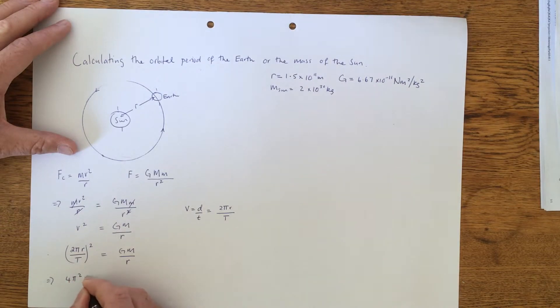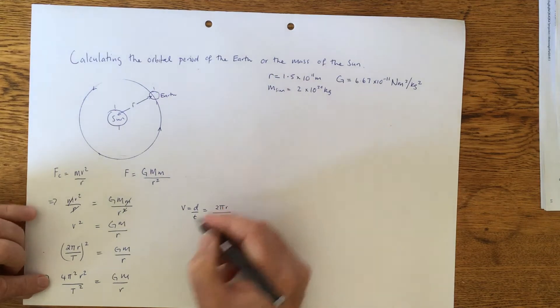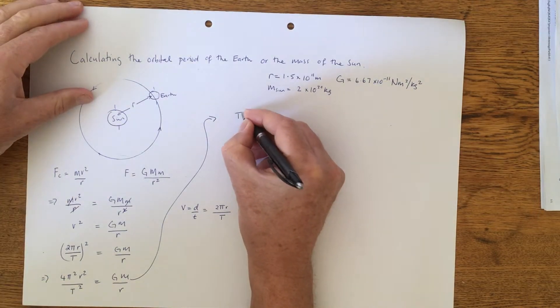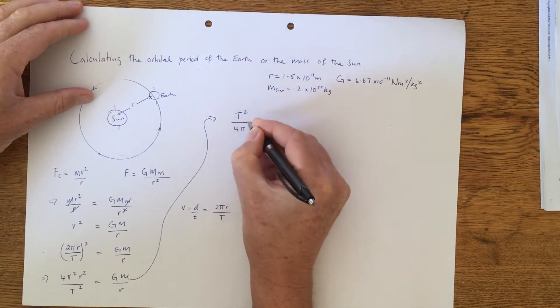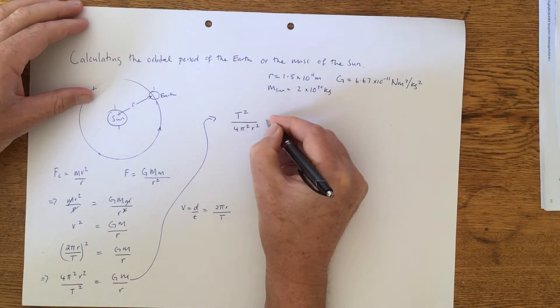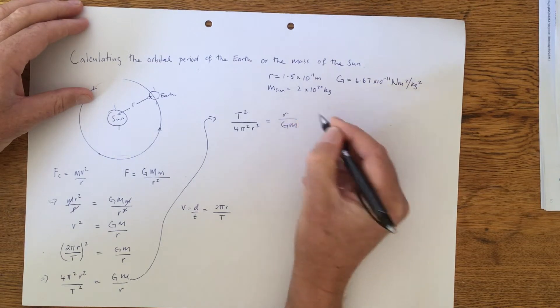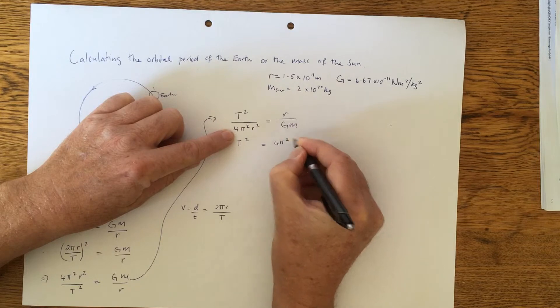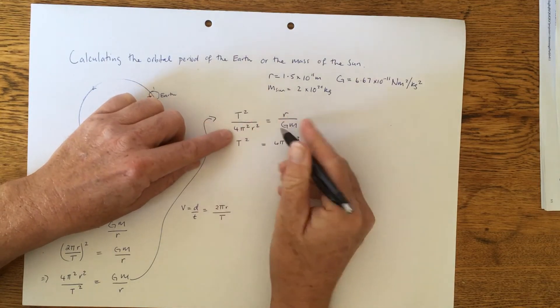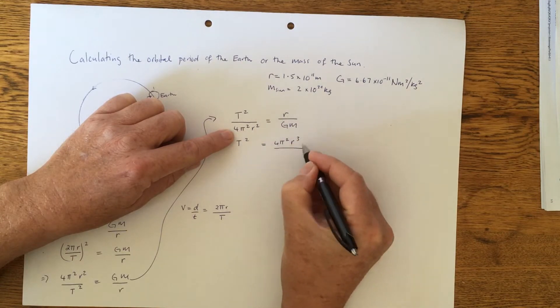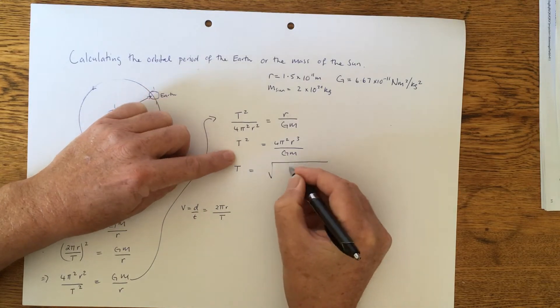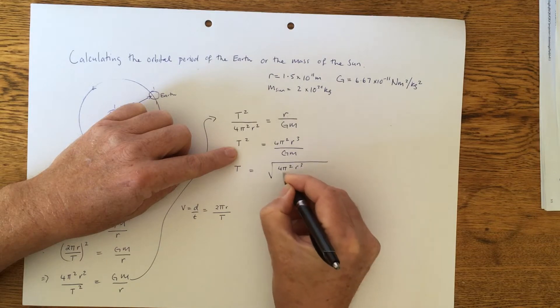Now let's just expand that out: 4π²R² over T² equals GM over R. Now, just to simplify that, because we're wanting the period on its own, we'll just basically flip that. 4π²R² over T² equals GM over R. If we bring that across to here, 4π²R³ this time, because we're bringing the whole of those variables there over to this side, divided by GM. And then T will be equal to the square root of 4π²R³ over GM.